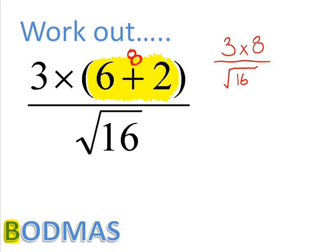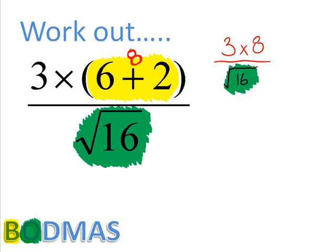Going along next with BODMAS. There's something in orders so we do that part next. That's the square root of 16. So the square root of 16 is 4. This leaves us with the question 3 times 8 over 4.